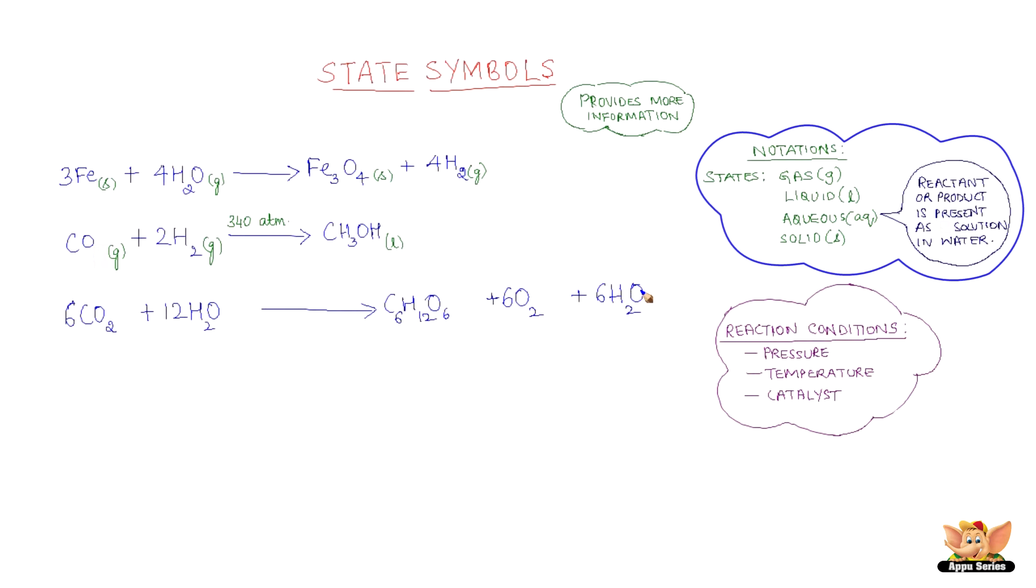Here carbon dioxide is in aqueous form, water is liquid and the products glucose and oxygen are in aqueous state. Water is in liquid state. Now we can rewrite the conditions in the presence of sunlight and chlorophyll.